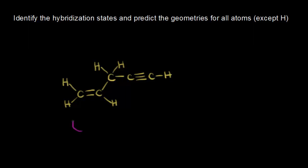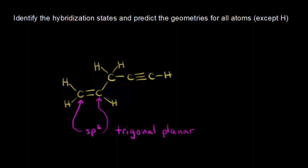Let's start with this carbon right here. The fast way of identifying a hybridization state is to say that carbon has a double bond to it, therefore it must be sp2 hybridized. If it's sp2 hybridized, we know the geometry around that carbon must be trigonal planar with bond angles approximately 120 degrees. This carbon over here also has a double bond to it, so it's also sp2 hybridized with trigonal planar geometry.